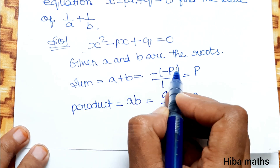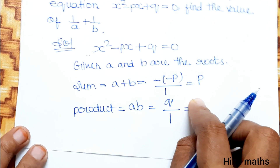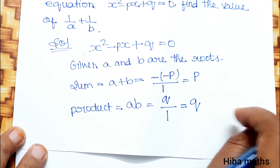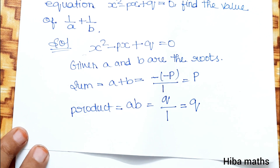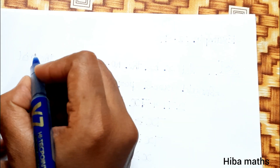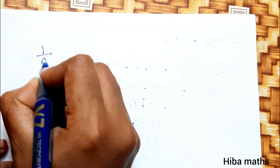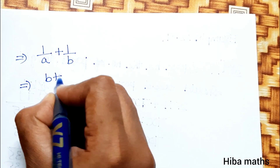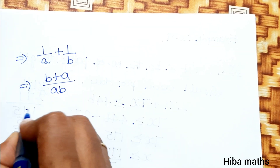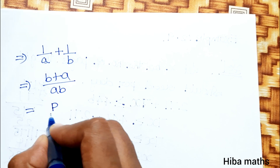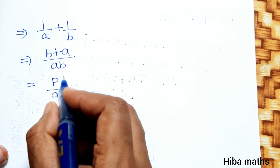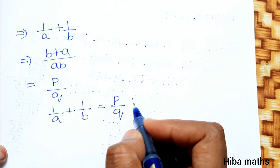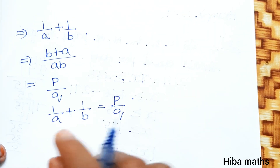The sum of roots equals minus coefficient of x divided by coefficient of x squared, which is b by 1, equal to b. Now, 1 by a plus 1 by b equals b plus a divided by a times b. The a plus b value is b and a times b value is q, so 1 by a plus 1 by b equals b by q. The sum is solved using the LCM method.